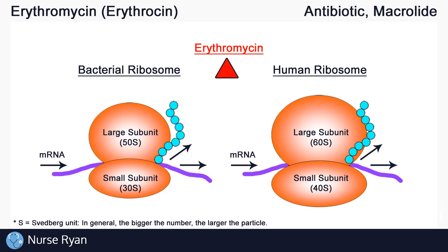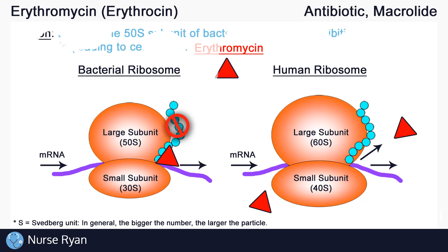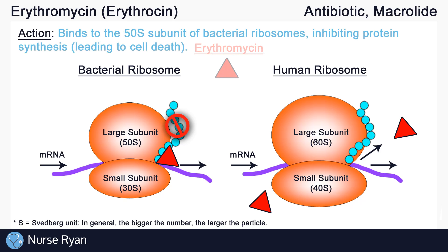Erythromycin, which we'll say are these little red triangles, happens to only target 50s subunits. Erythromycin binds to the 50s subunits and interferes with their ability to synthesize proteins. This means that only bacterial ribosomes are affected, leaving human cells untouched. So one last time: erythromycin enters bacterial cells, binds to the 50s subunit of the ribosomes, inhibiting protein synthesis, which eventually causes the bacteria to die. And that is how erythromycin and macrolides in general work as antibiotics.